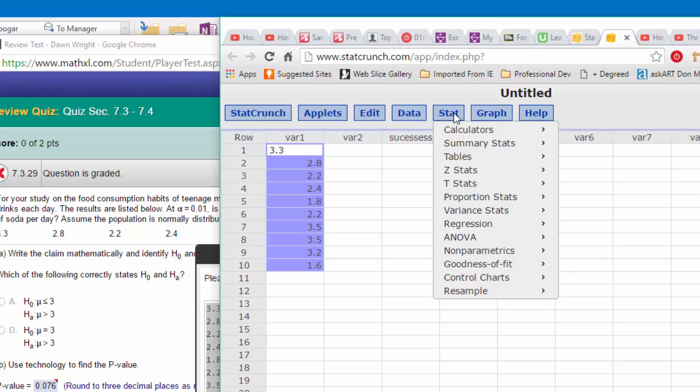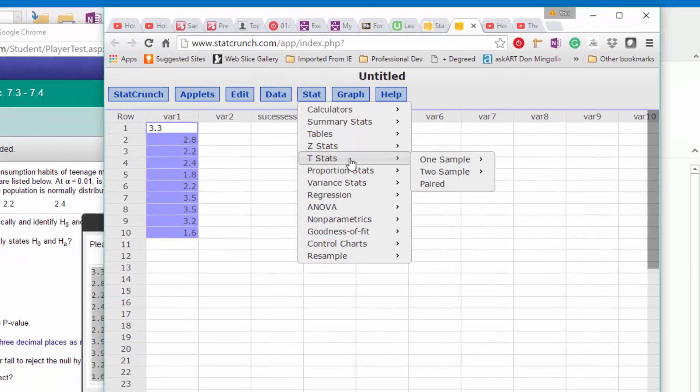Okay, the question is do we do z-stats or t-stats? Well, we don't know the population standard deviation, do we? We know the sample standard deviation, so that's one clue. The other clue is that we've only got 10 items, 10 values. So our n is 10, much less than 30. So we're going to do a t-stat test.